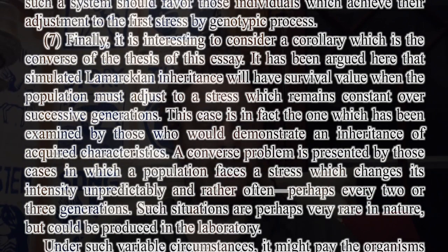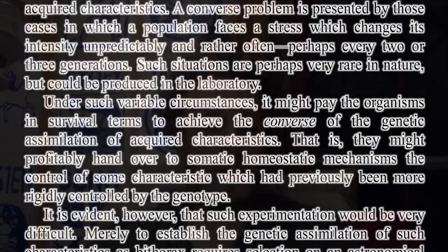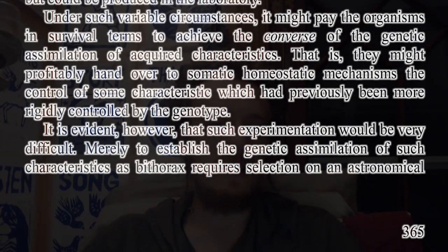7. Finally, it is interesting to consider a corollary, which is the converse of the thesis of this essay. It has been argued here that simulated Lamarckian inheritance will have survival value when the population must adjust to a stress which remains constant over successive generations. This case is, in fact, the one which has been examined by those who would demonstrate an inheritance of acquired characteristics. A converse problem is presented by those cases in which a population faces a stress which changes its intensity unpredictably and rather often, perhaps every two or three generations. Such situations are perhaps very rare in nature but could be produced in the laboratory. Under such variable circumstances, it might pay the organisms in survival terms to achieve the converse of the genetic assimilation of acquired characteristics — that is, they might profitably hand over to somatic homeostatic mechanisms the control of some characteristic which had previously been more rigidly controlled by the genotype. It is evident, however, that such experimentation would be very difficult.